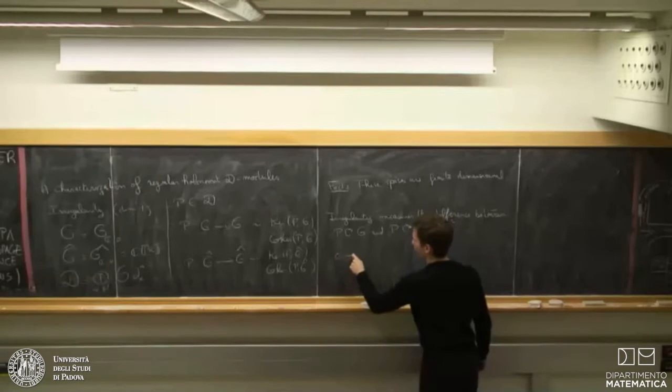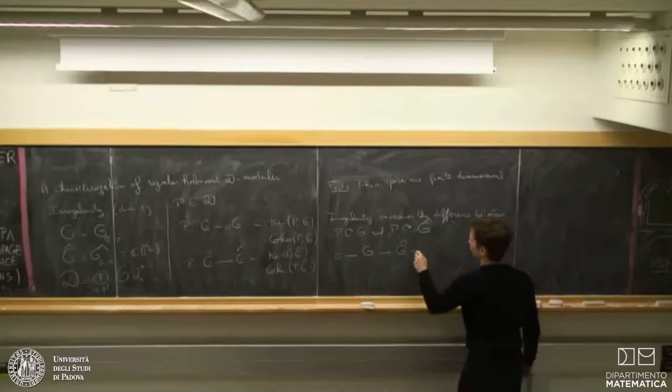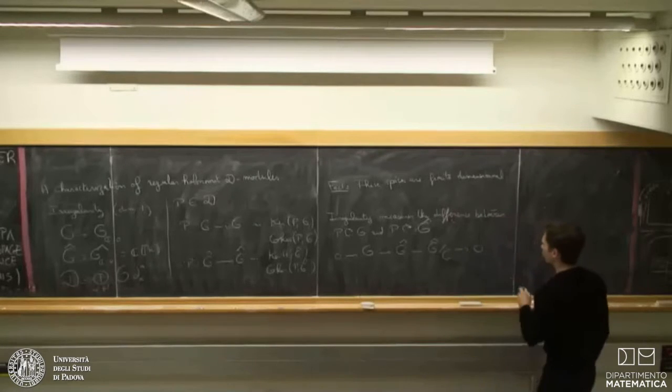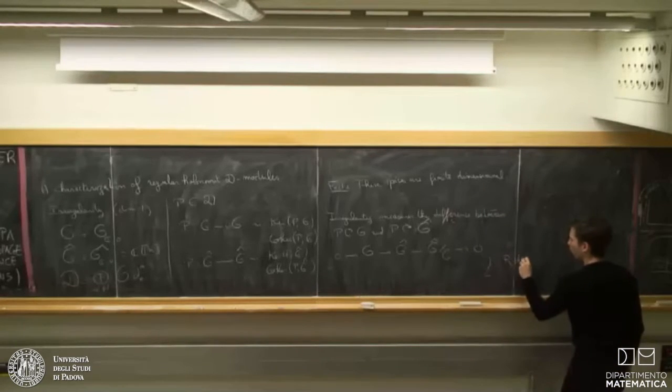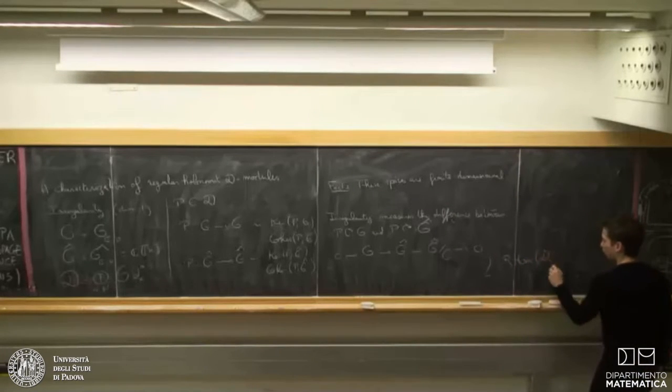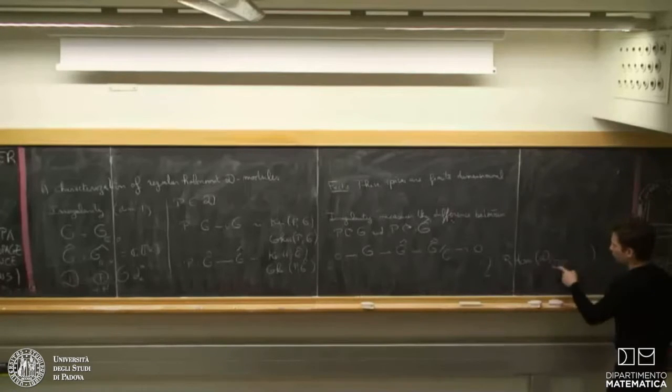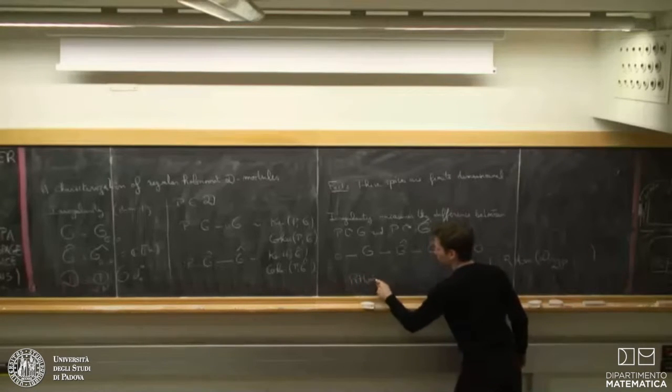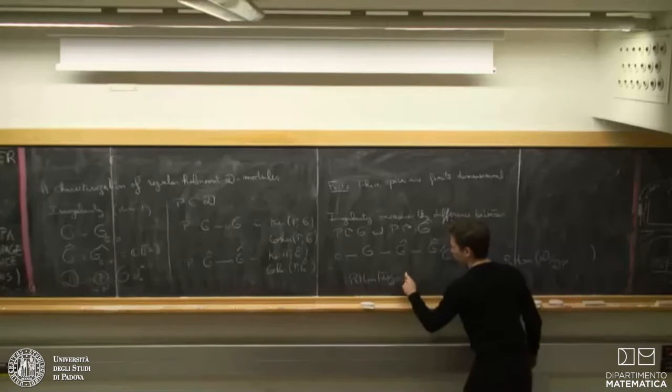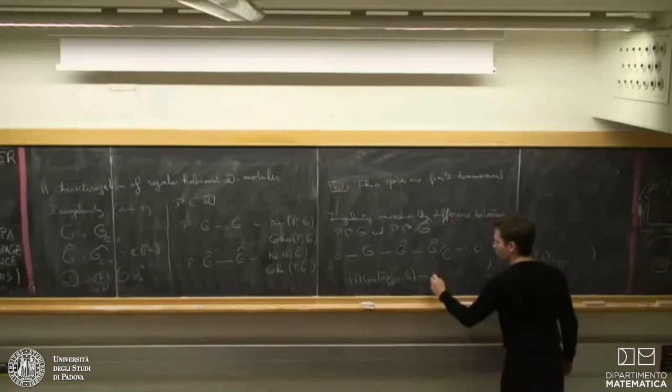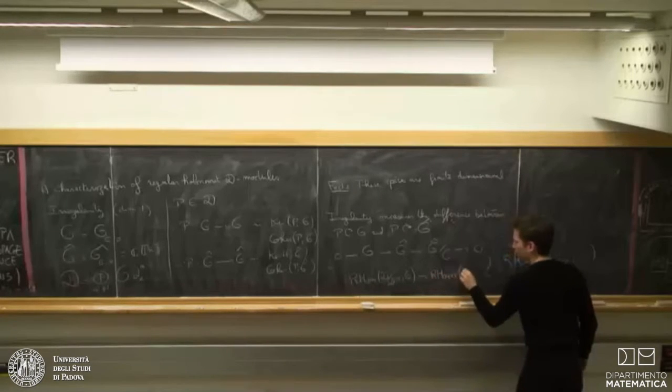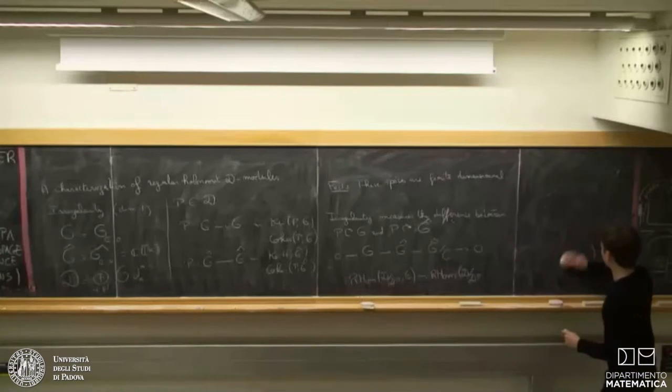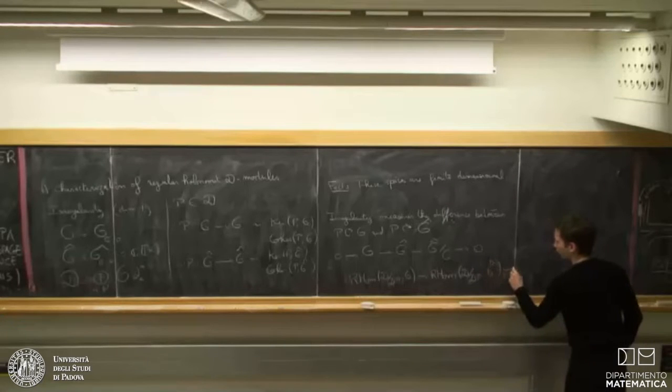So, if there is one thing to remember from this talk, this is essentially this sentence. Let me put it in a more precise way. So, I will start with the following exact sequence of D module. And from this, what we can do is apply the R hom in the category of D module of this D module.